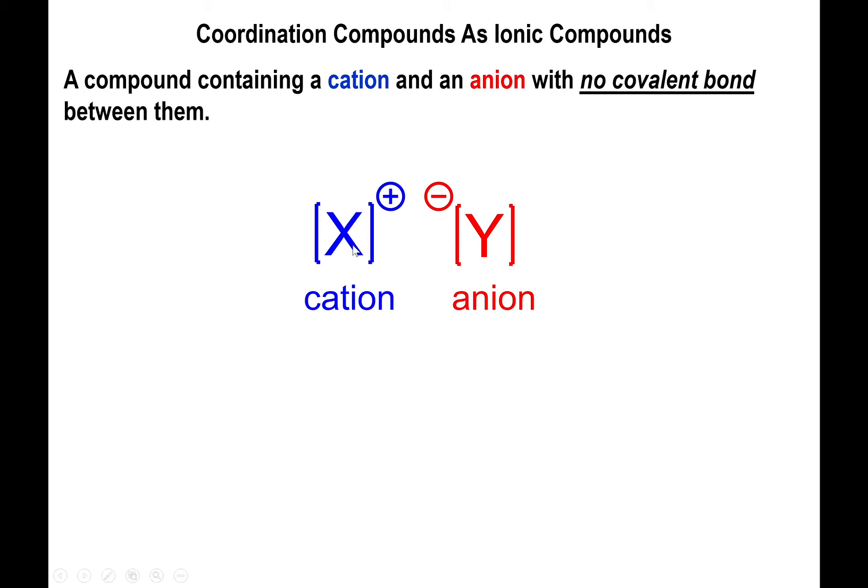What's going to happen is that either the cation or the anion could be a transition metal complex. The cation could be regular like sodium or potassium and the coordination complex could be the anion, or the cation could be the coordination complex and the anion could be something regular like bromide or chloride, or both of them could be coordinated complexes.